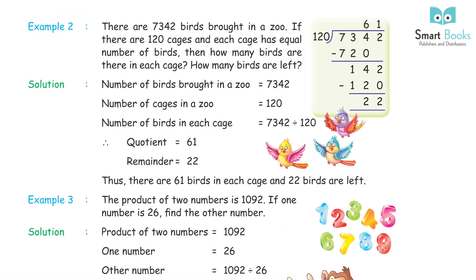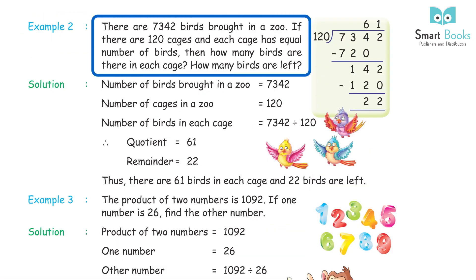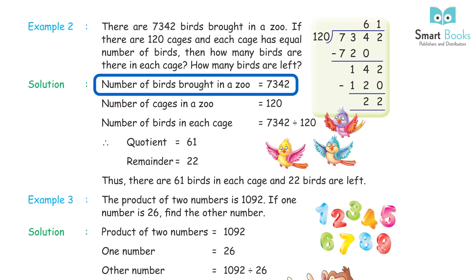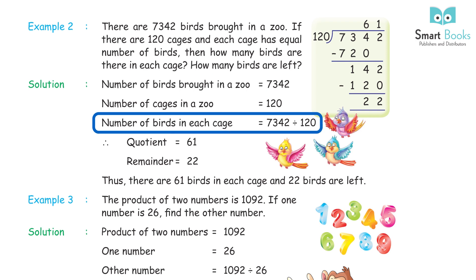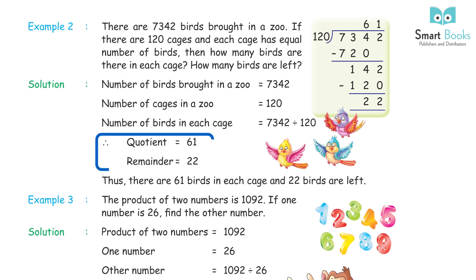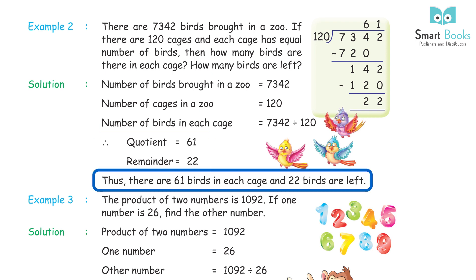Example 2: there are 7342 birds brought into a zoo. If there are 120 cages and each cage has an equal number of birds, how many birds are in each cage and how many are left? Solution: 7342 ÷ 120 → quotient 61, remainder 22. Thus, there are 61 birds in each cage and 22 birds are left.